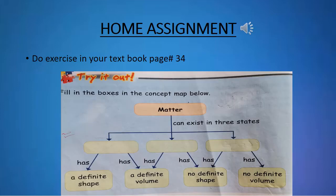Home assignment. Do the exercise in your textbook, page number 34. Fill in the boxes in the concept map below. Matter can exist in three states. You have to write the names of three states: which has a definite shape and definite volume, which has a definite volume but no definite shape, and which has no definite shape and no definite volume.